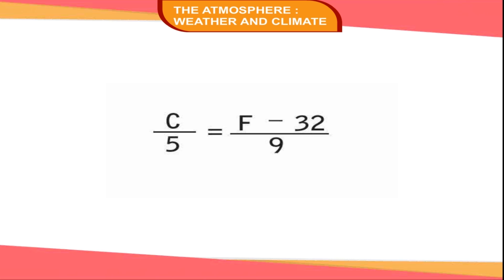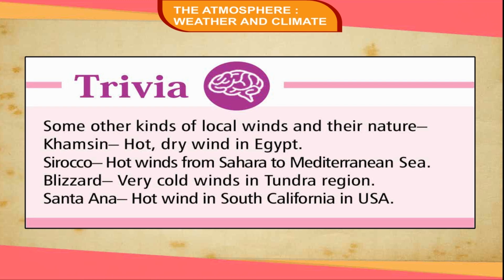The temperature on one scale is converted to another using the formula: C/5 = (F − 32)/9. Trivia — Some local winds and their nature: Khamsin is a hot, dry wind in Egypt; Sirocco refers to hot winds from the Sahara to the Mediterranean Sea; Blizzard describes very cold winds in the Tundra region; and Santa Ana is a hot wind in Southern California, US.